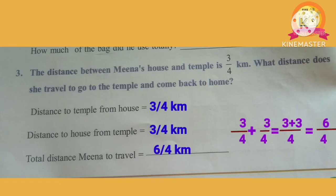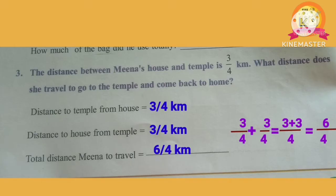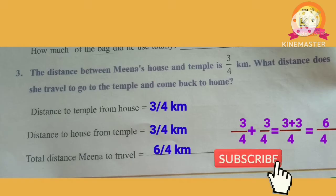Third problem: The distance between Mina's house and the temple is 3 by 4 kilometers. What distance does she travel to go to the temple and come back? Distance to temple is 3 by 4 km; distance back is also 3 by 4 km. We add: 3 by 4 plus 3 by 4 equals 6 by 4. Therefore, the total distance Mina travels is 6 by 4 kilometers.